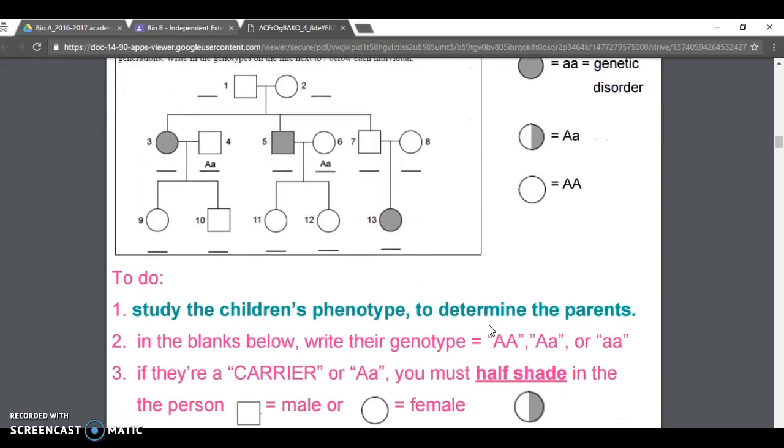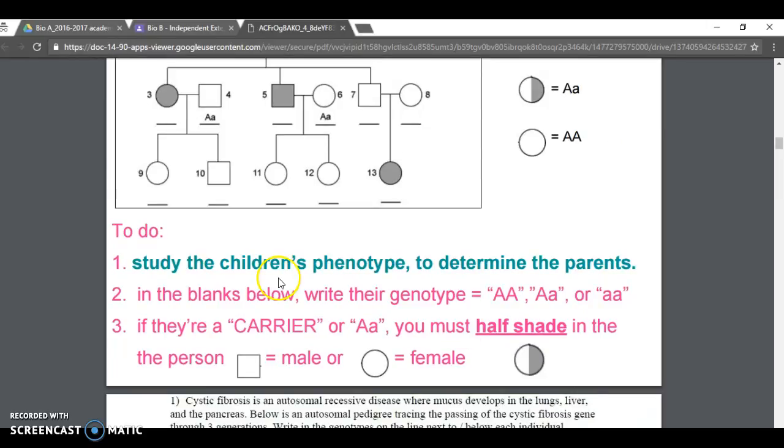It's the same type of problem. The only difference is this disorder is albinism or being an albino. It says it's caused by recessive allele. So once again, you have a disease caused by recessive alleles, not dominant ones. If they're fully shaded in, they have the genetic disorder, otherwise known as being an albino.